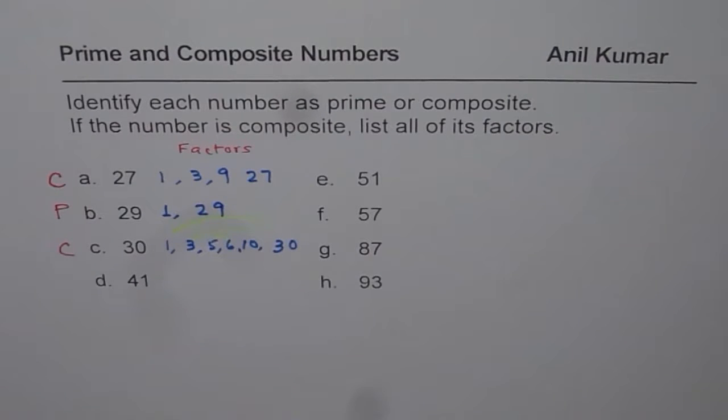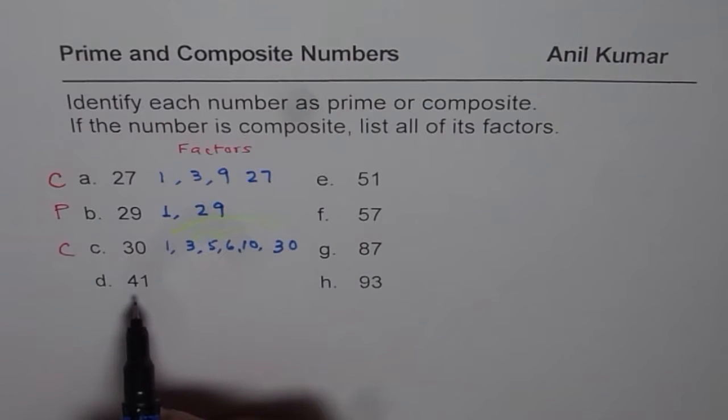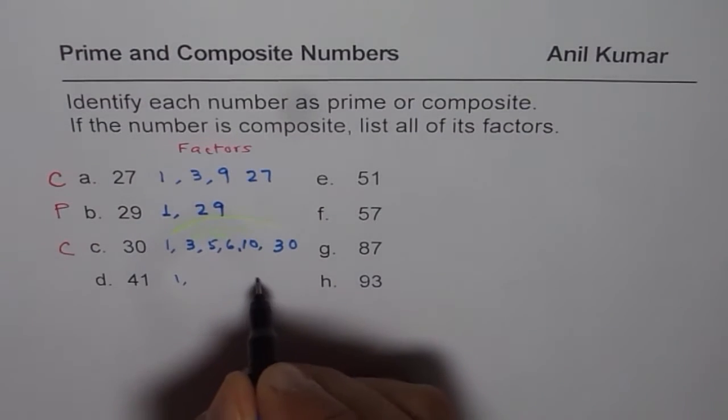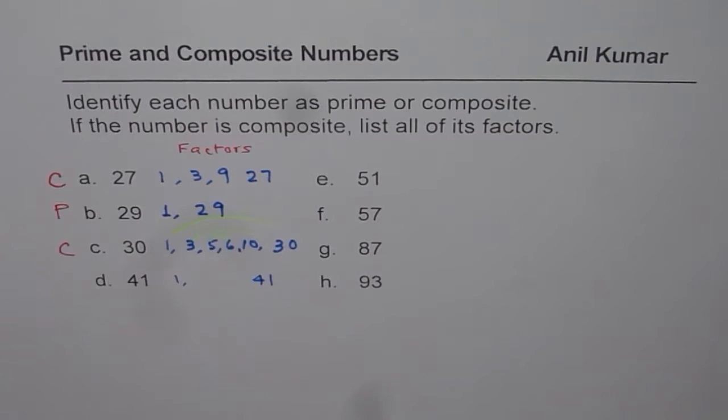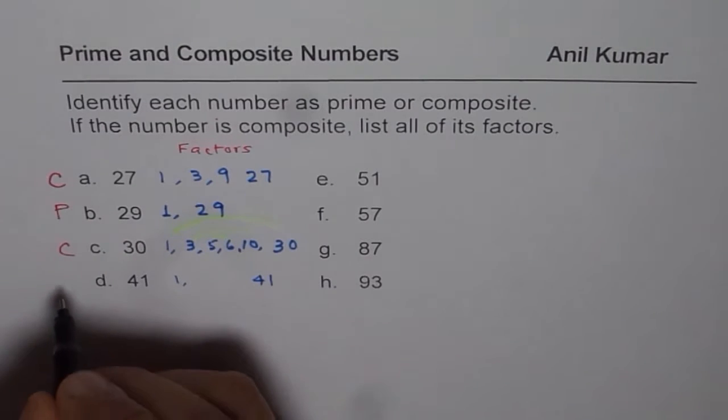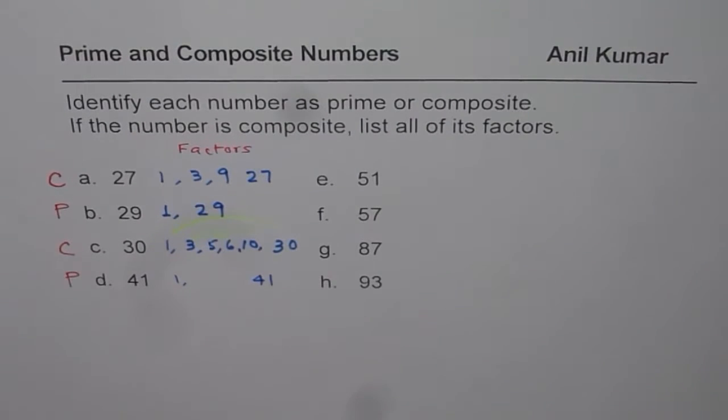Now let's look into 41. 4 plus 1, 5. So it cannot be divided by 3. Now 41 means 1 times 41. It seems that there are only 2 factors. And therefore, this one is a prime number.